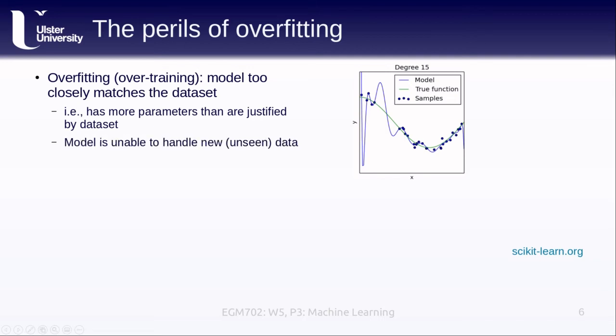Another way of thinking of this is that our model has more parameters than are actually justified by the data set that we're using. As a result, the model is usually going to be unable to handle new data that it hasn't seen before.